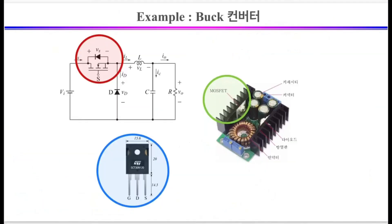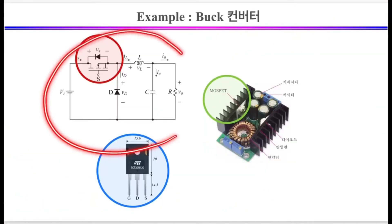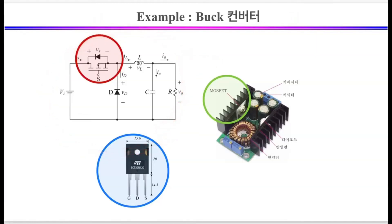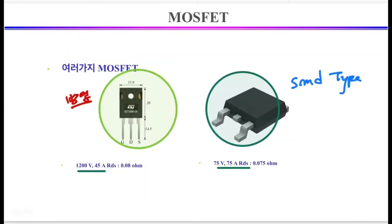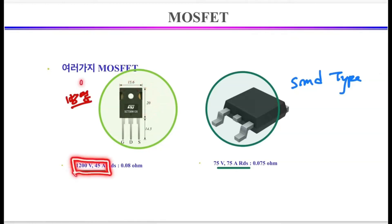This chart shows the buck converter circuit, which is a type of DC-DC converter. The basic element of the buck converter can also be a MOSFET. This chart shows two types of MOSFET classified by rated voltage and rated current. As seen in the picture, this MOSFET will be a 1200 volt, 45 ampere class MOSFET. The size of this MOSFET is approximately 2 centimeters long and 1.6 centimeters wide, and is configured like this for heat dissipation.